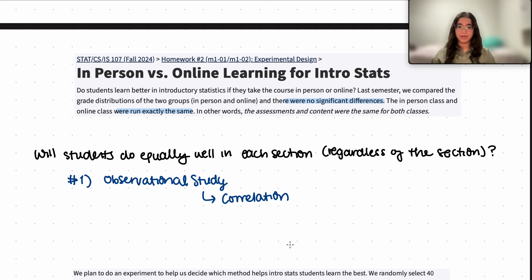This is why we really cannot assume that students will do well in each section just because this is an observational study. This is more associated with correlation and there's just too many confounders going on here in order to really prove whether there is a difference between these two groups.